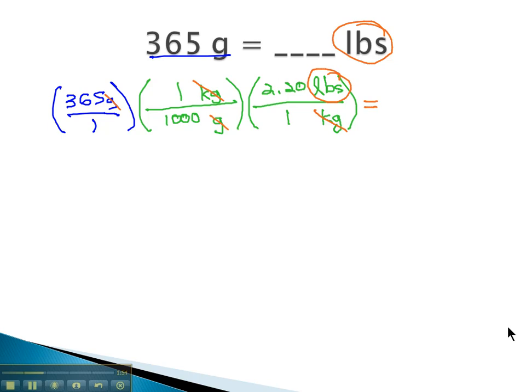We're ready to multiply straight across. 365 times 1 times 2.2 pounds is 803 pounds. Over 1 times 100 times 1 is, or 1,000 is 1,000. And when we divide, we get .803 pounds.